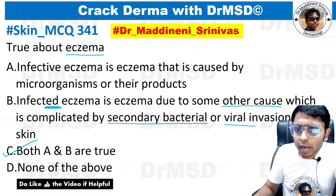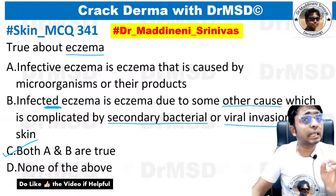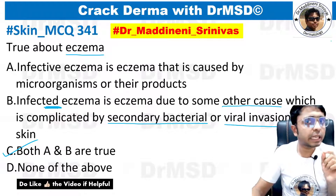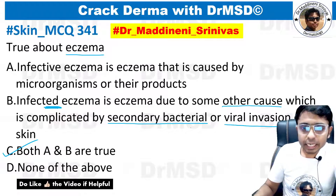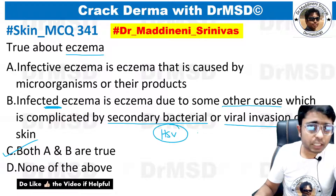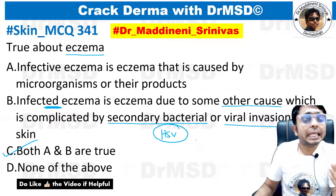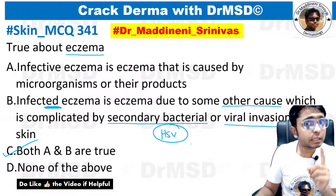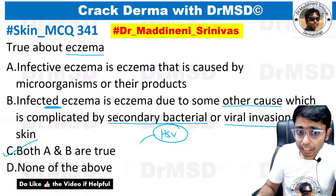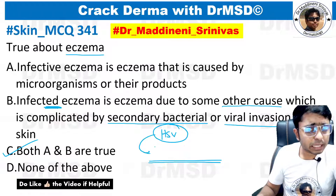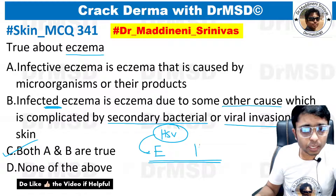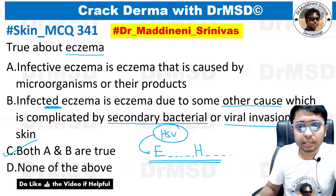Infected eczema can also involve viral invasion. For example, if there is a herpes simplex virus (HSV) superinfection in an atopic dermatitis child, that is another case. So if there is an HSV superinfection added to an atopic dermatitis child, what do we call that diagnosis? I want all of you to put your answer in the comment section. The name starts with E and H — two letters — so fill in the blanks.